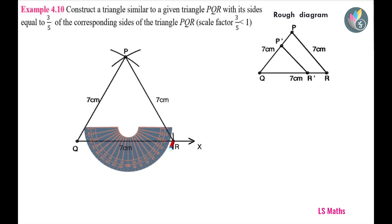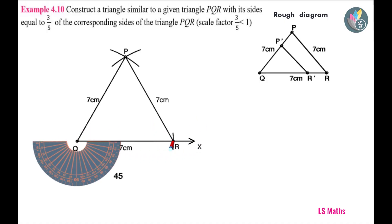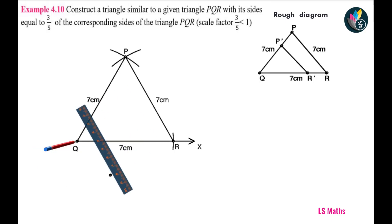Next step is to draw a ray QY at Q such that angle RQY is equal to 45 degree. Once again, a question arises here. Why 45 degree? We may take any acute angle here, but by taking 45 degree, we can draw the lines more legibly. Now, let us draw the ray QY.